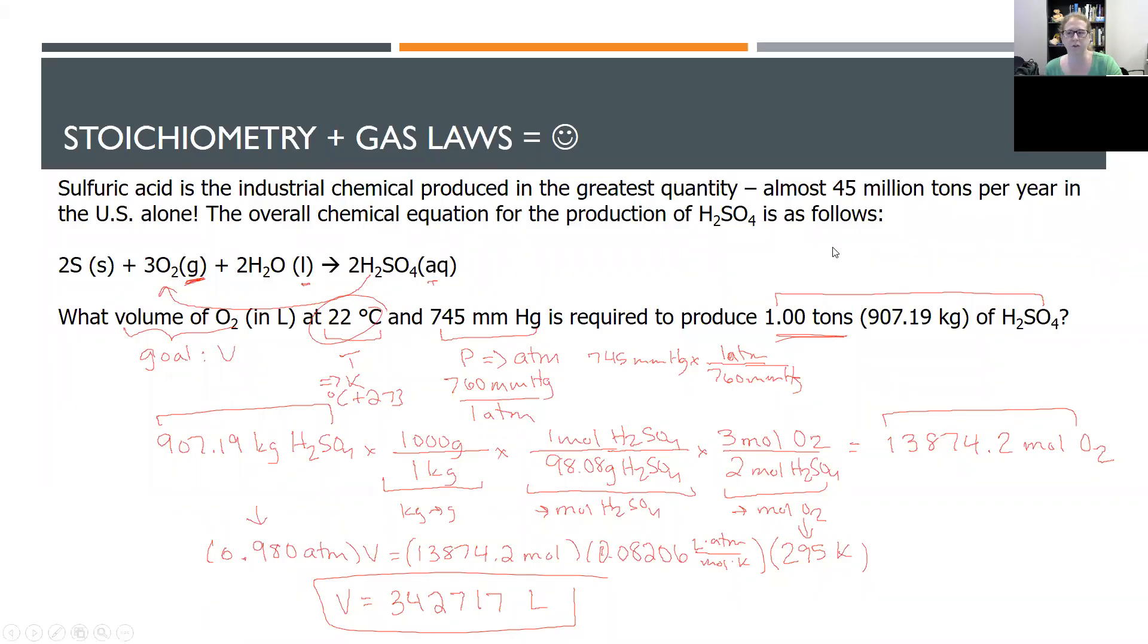So I get 342,717 liters. Again, I'm making a literal ton of sulfuric acid. So I'm not surprised that this is a pretty large number. But once more to summarize, PV equals nRT is a way to use moles to relate to volume temperature pressure. And stoichiometry is a way to calculate moles. The two things go together really well. And it gives us an extra layer of things that we can calculate.